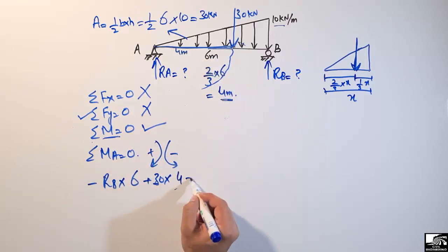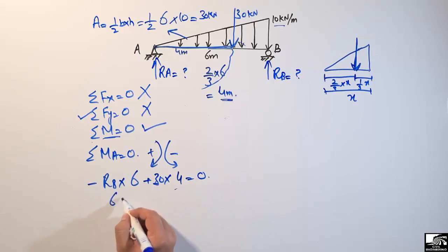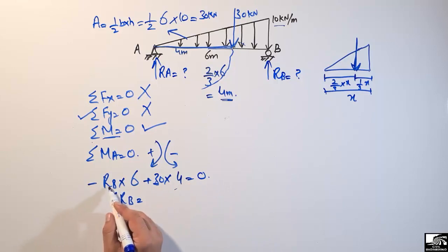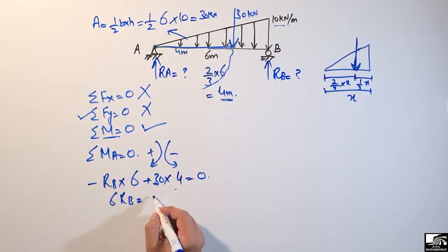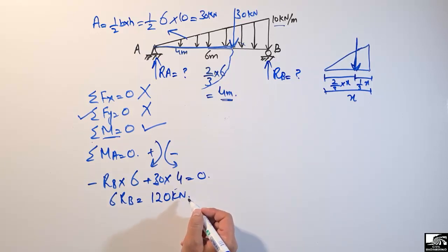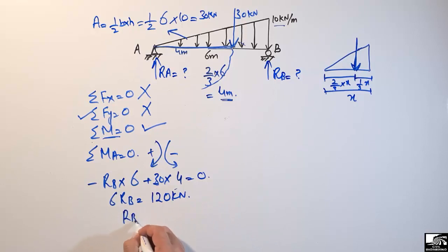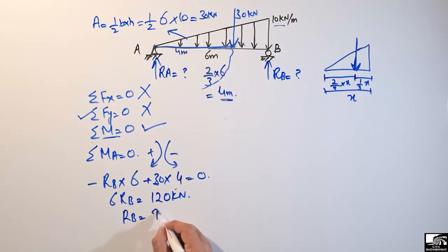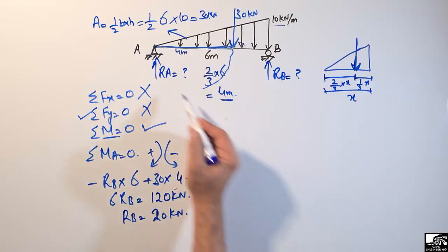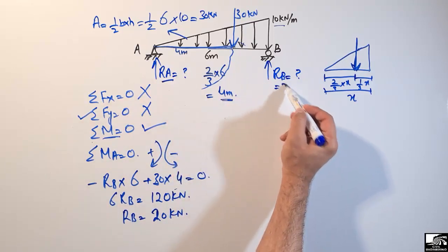Setting the summation of all moments equal to zero: 6·Rb = 30 × 4 = 120 kilonewton·meter. Dividing both sides by 6, Rb comes out to be 20 kilonewton.